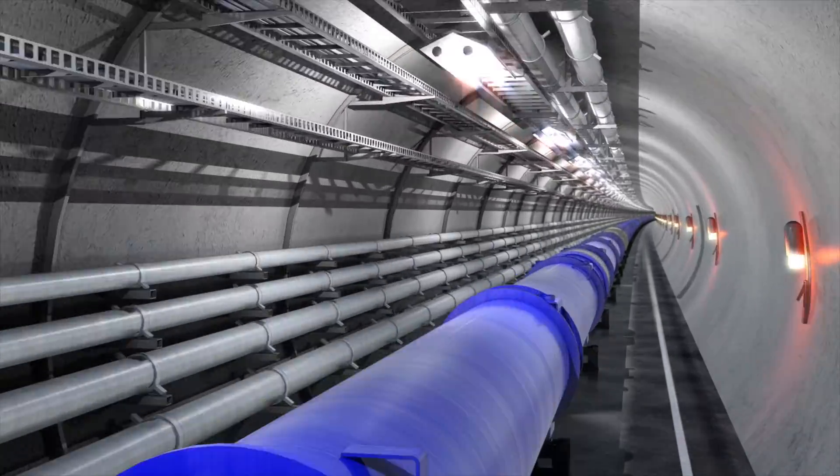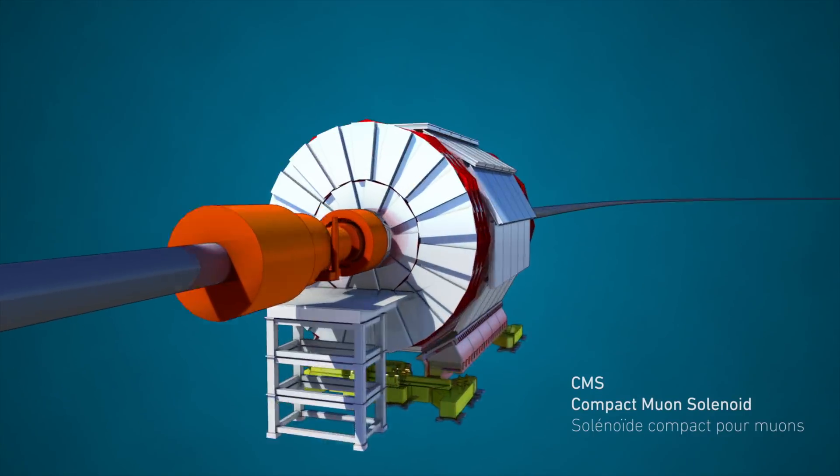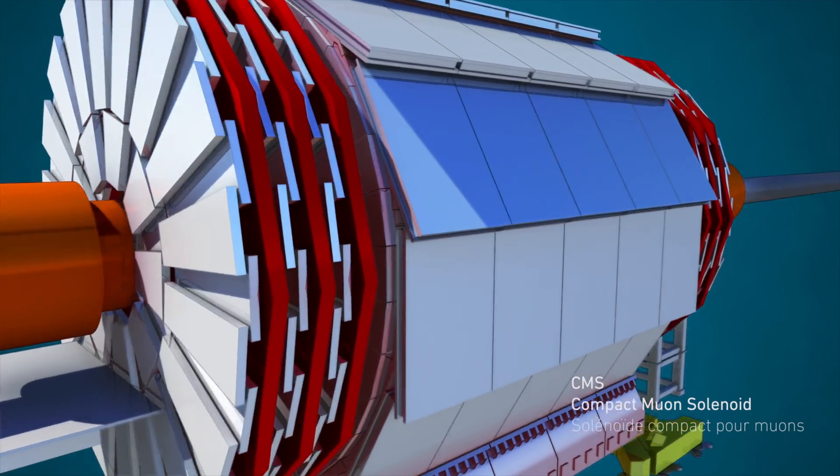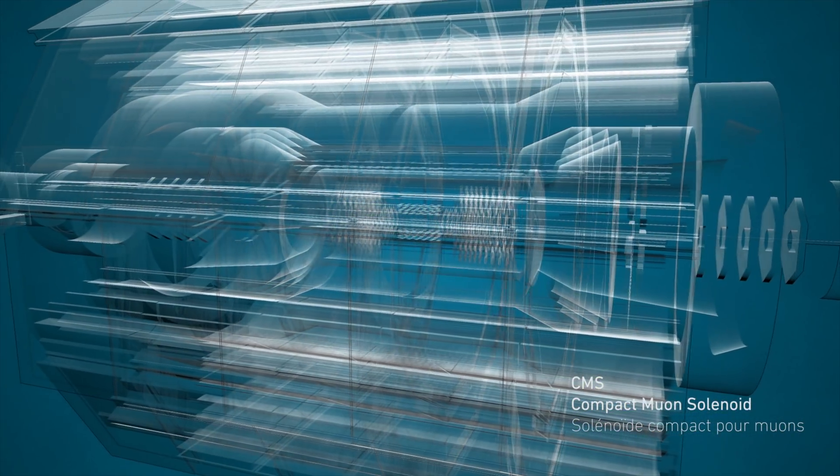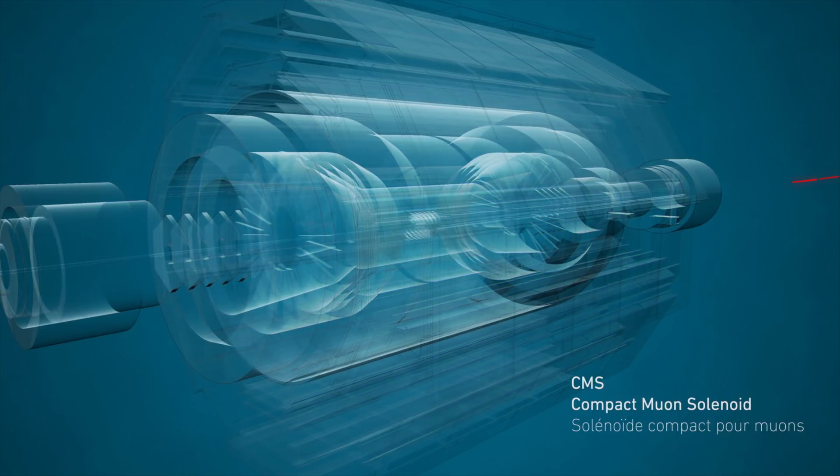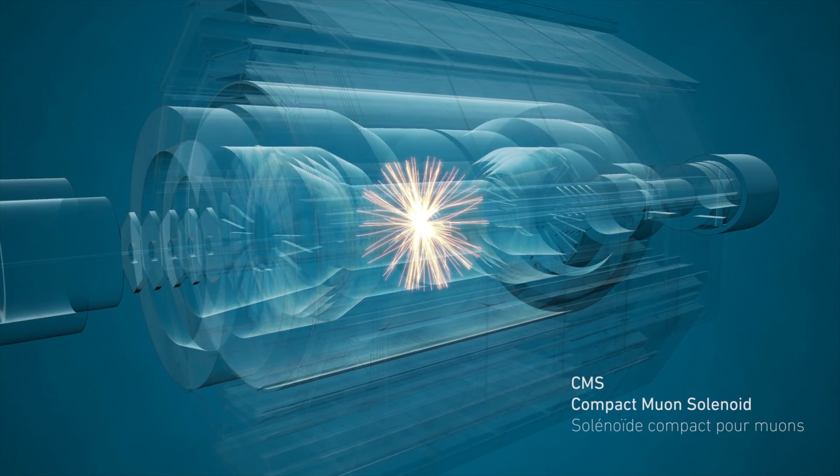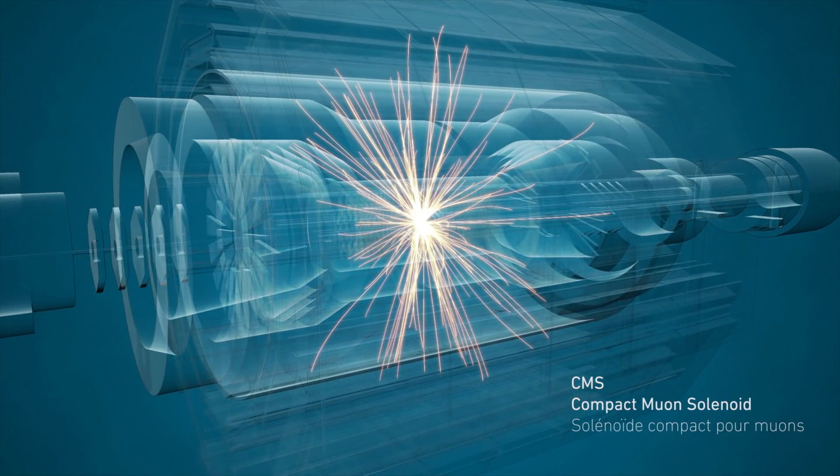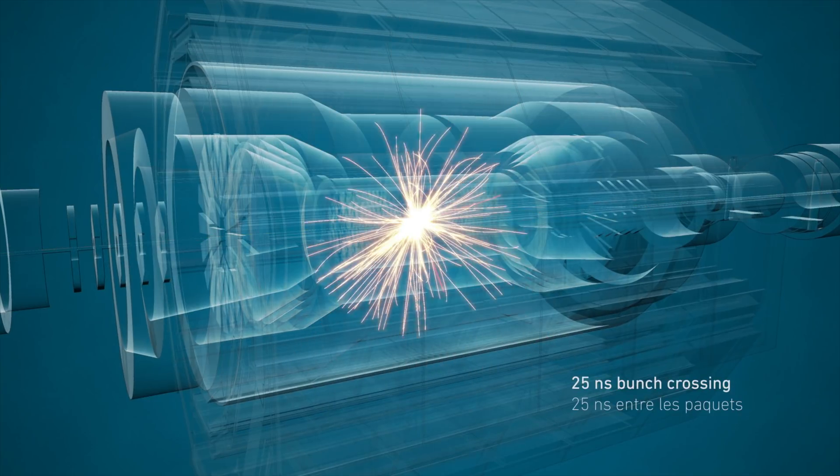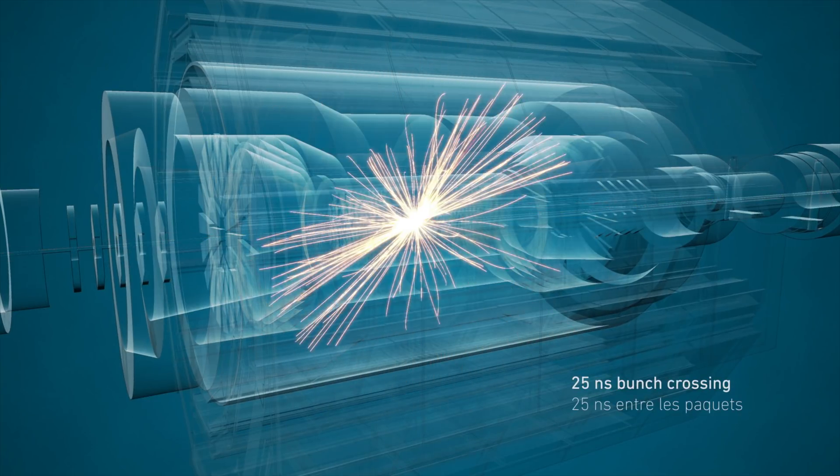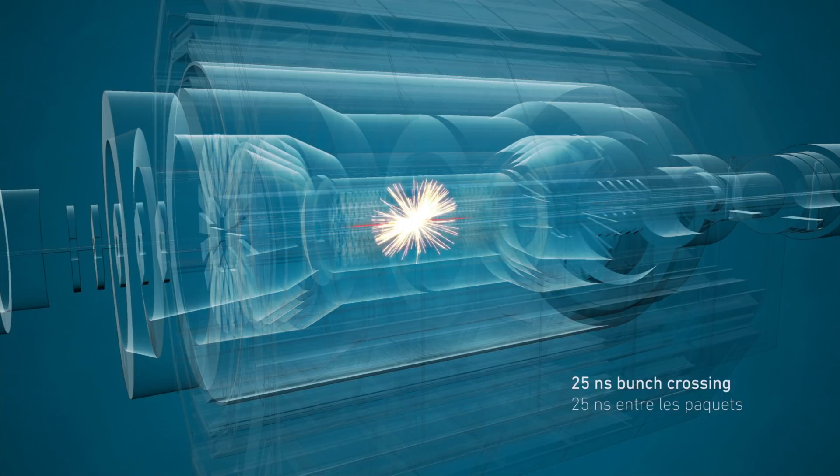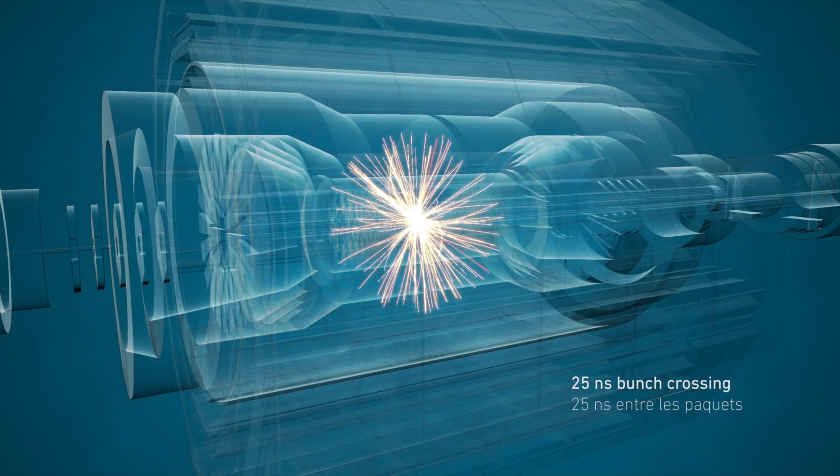The parts of the detector near the point where the beams collide in the center of the detector experience a lot of radiation damage due to the huge rate of particles hitting the detector. The radiation environment will be even more daunting in the high luminosity LHC era, so we have to give much of the detector an overhaul, especially the parts near where the beam passes through the center of the detector.